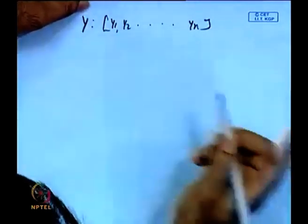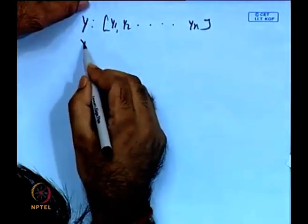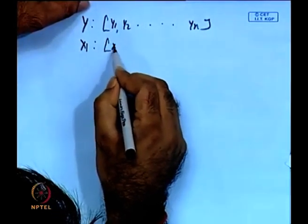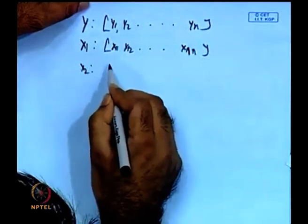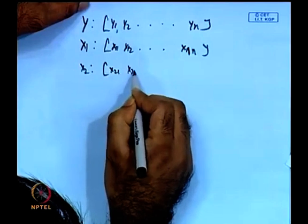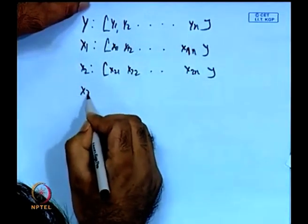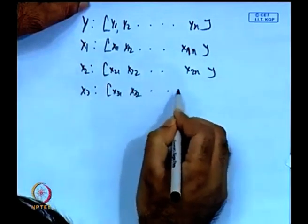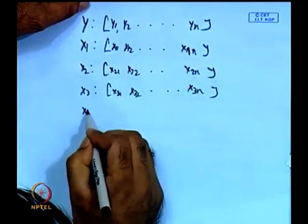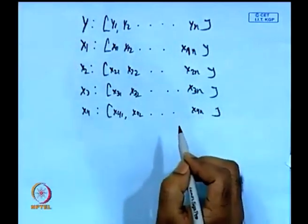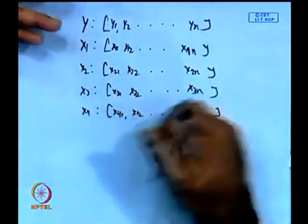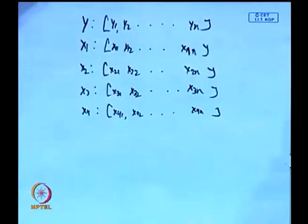Similarly, for different independent variables: X1 is nothing but X₁₁, X₁₂, …, X₁n. Similarly, for X2 the structure is X₂₁, X₂₂, …, X₂n. Then X3 consists of X₃₁, …, X₃n. Then we move to X4: X₄₁, X₄₂, …, X₄n. For K number of variables, it will be X up to Xk. This particular formulation covers all independent variables and one dependent variable — the sample information can be set in this way.